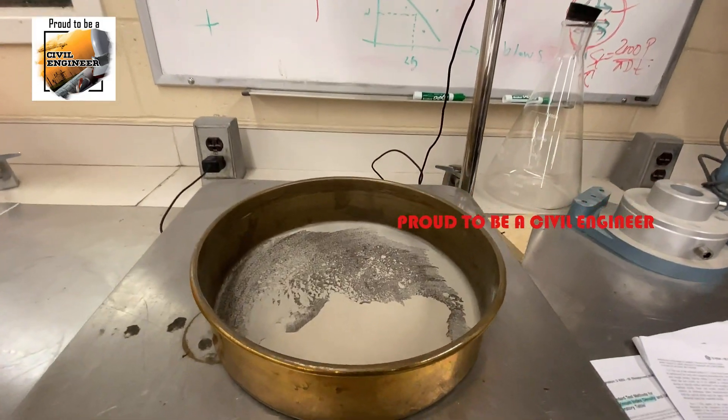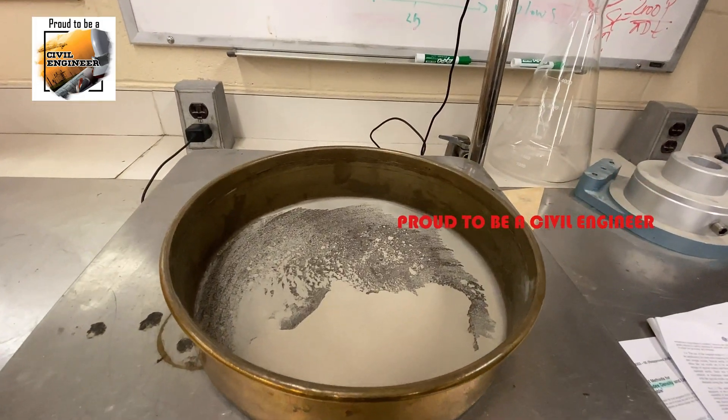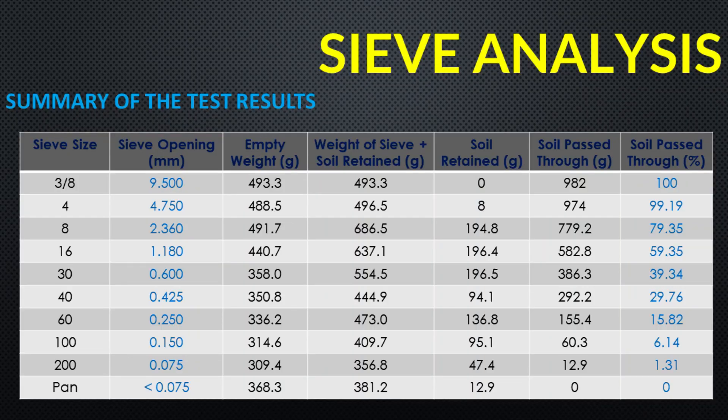Calculate the mass of material passing through each sieve by subtracting M3 from M2 for each sieve. Calculate the percentage passing for each sieve by dividing the mass passing through the sieve by the total mass M2 and multiplying by 100. Calculate the cumulative percentage passing for each sieve, starting from the top sieve and working downward. The summary of the test results are given in the table.